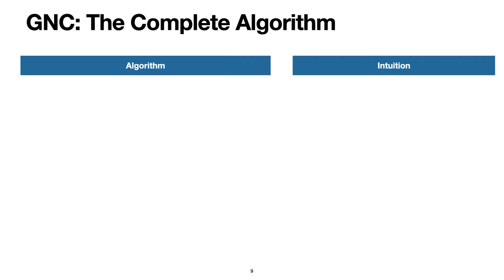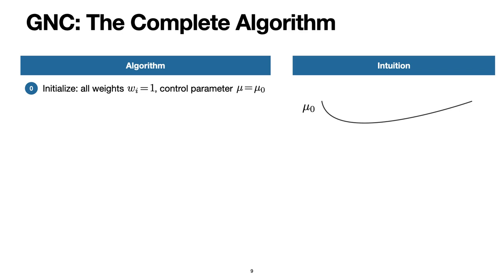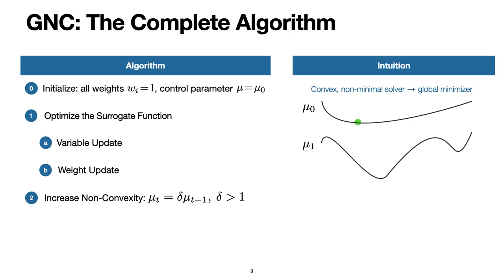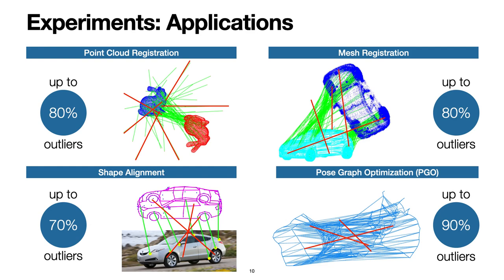Now we state the complete GNC algorithm. At initialization, all weights are set to one, meaning no prior information on inliers and outliers. The control parameter mu is set to mu0 such that the first surrogate function is convex, and we obtain a global minimizer using non-minimal solvers. Then we increase the non-convexity by multiplying mu by a constant factor delta, using the solution from the last step as the initial guess for the current step. We keep doing this until the cost function converges.